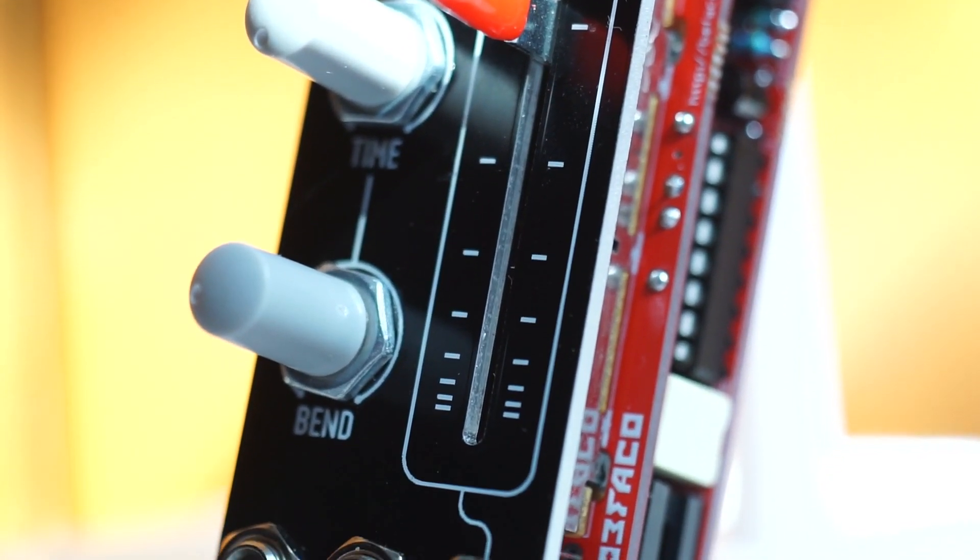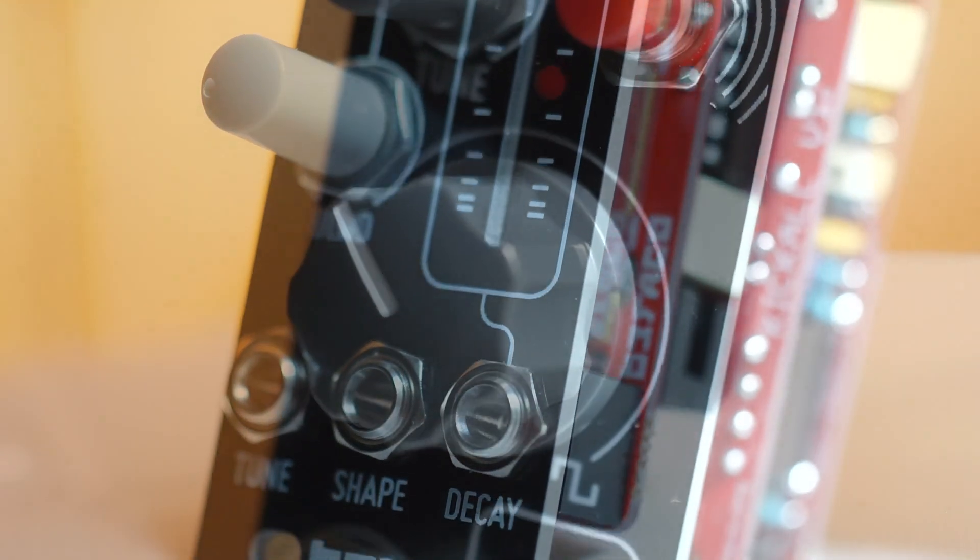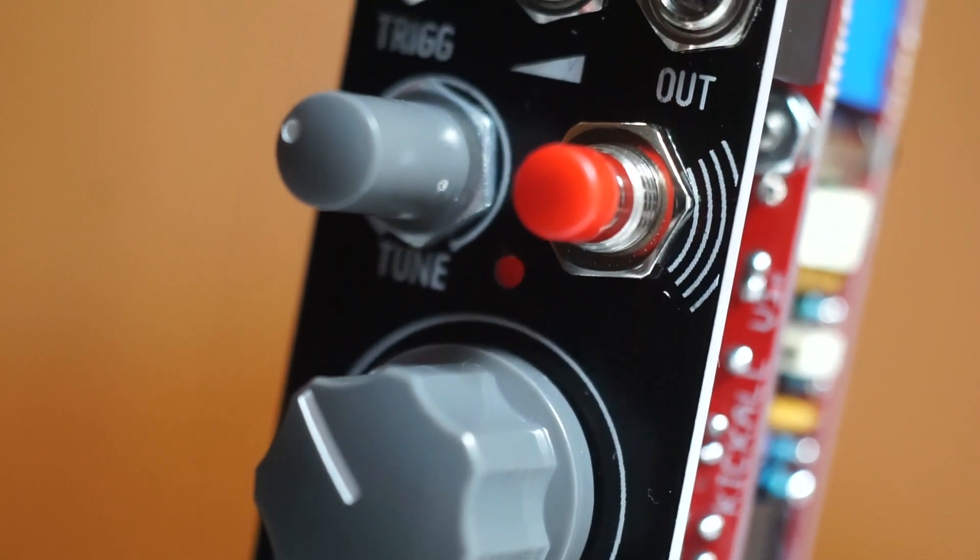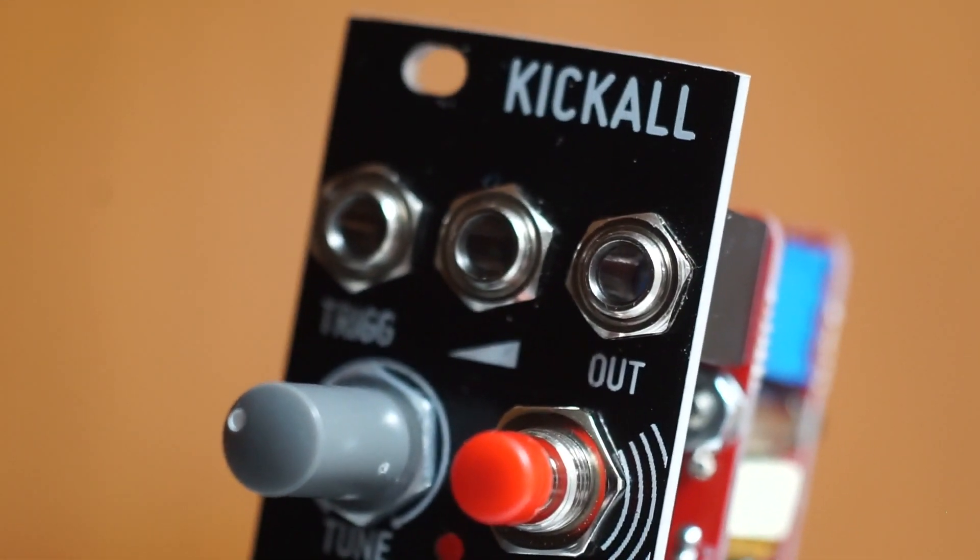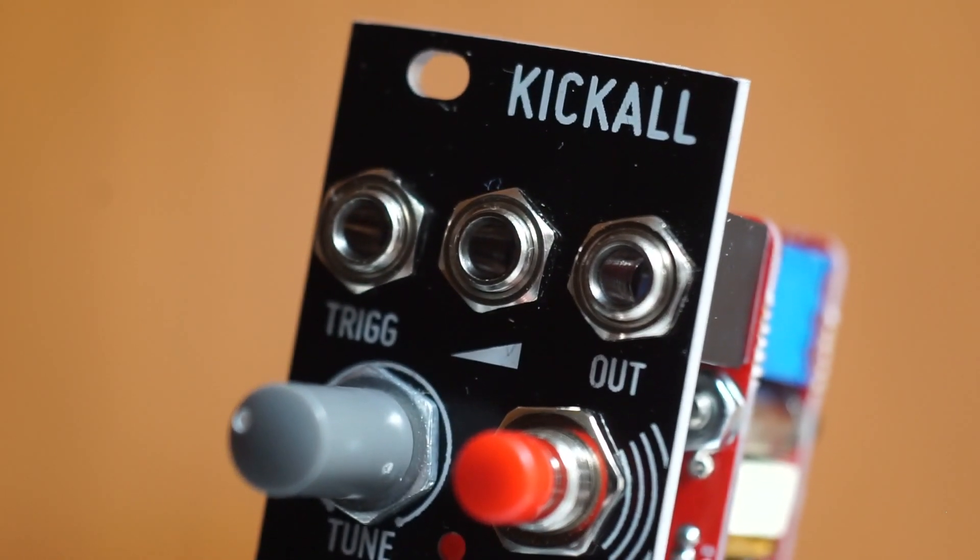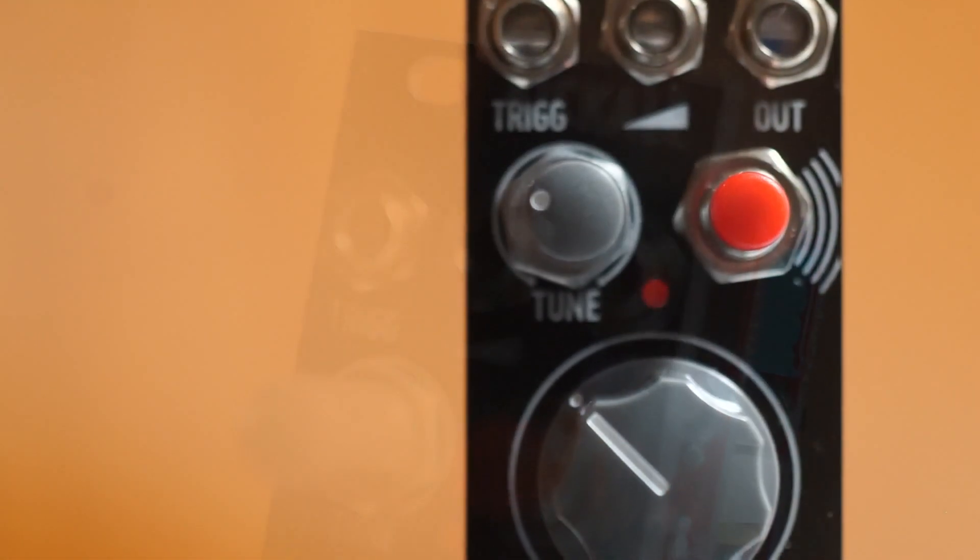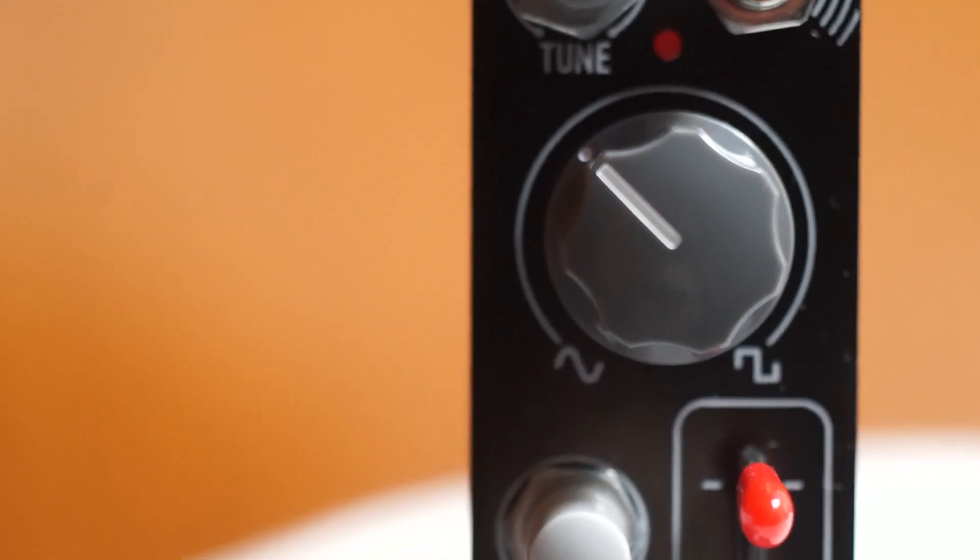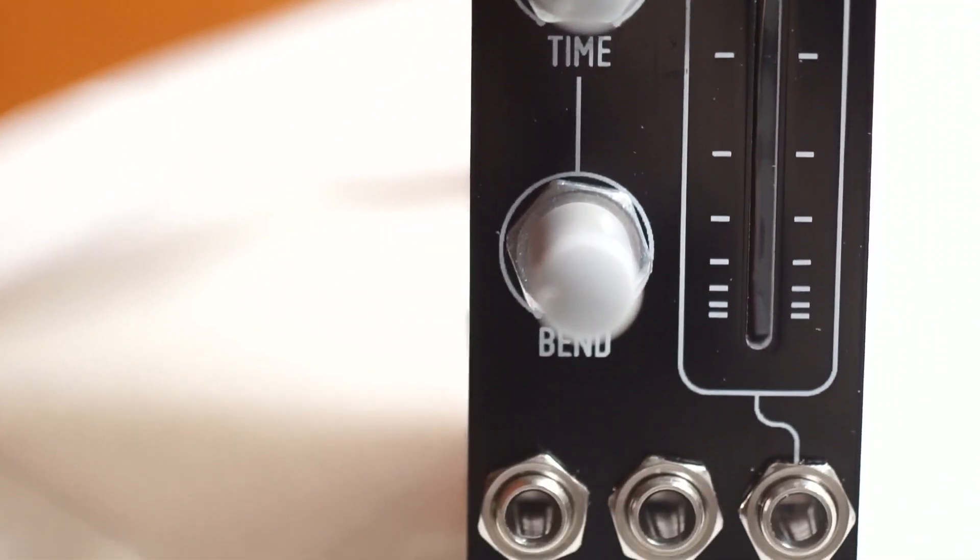Two decay envelopes, one for pitch with time and depth controls, and one for amplitude controlled via the fader and the CV input. It also has a CV input for amplitude which disengages the internal decay.